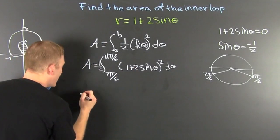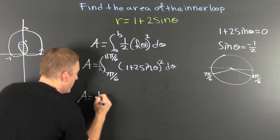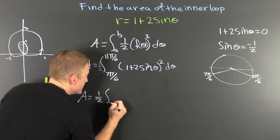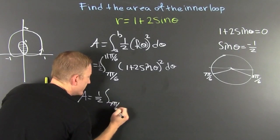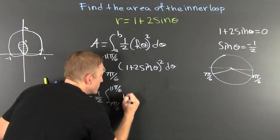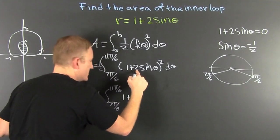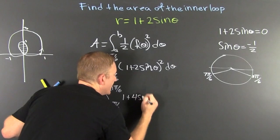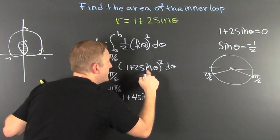All right. So then you multiply that guy out. And your area is going to be 1 half times 7 pi over 6 to 11 pi over 6. And then this is 1 plus this one times that one, double it, 4 sine theta. And then that one squared, plus 4 sine squared theta d theta.